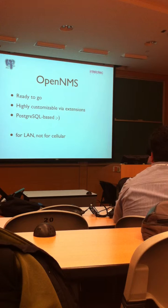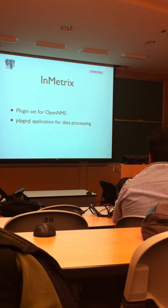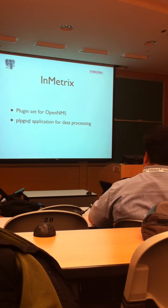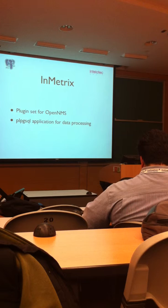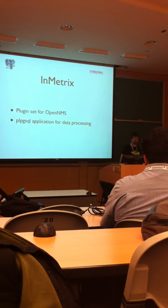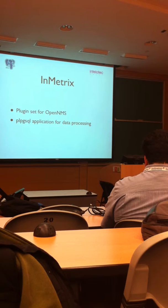So, we developed some plugin set, extension set for PostgreSQL. We called it Novin Matrix, and maybe we'll publish it like an OpenNMS extension, but now we are discussing this probability. This is a plugin set just for GUI, and the PL/pgSQL application for processing data, for monitoring chains, traversing chains, and so on. And this part is really complicated and huge.